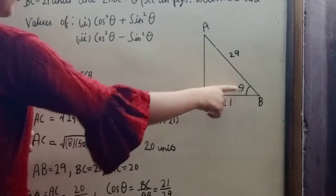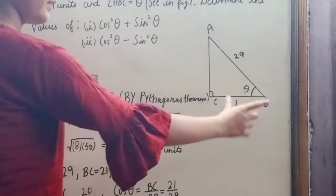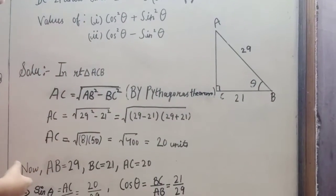In right angle triangle ACB, AC is equal to root AB square minus BC square. Put their values and solve this.